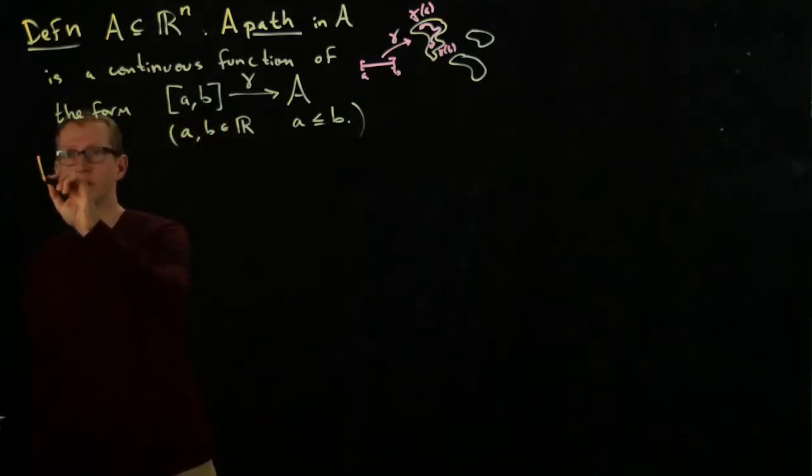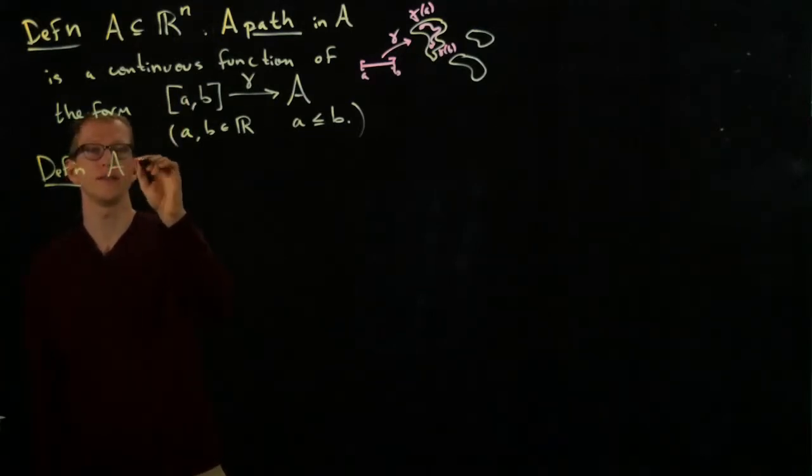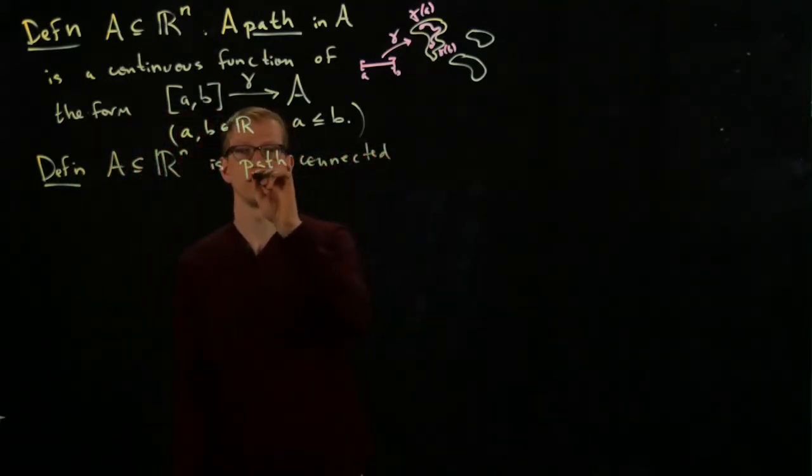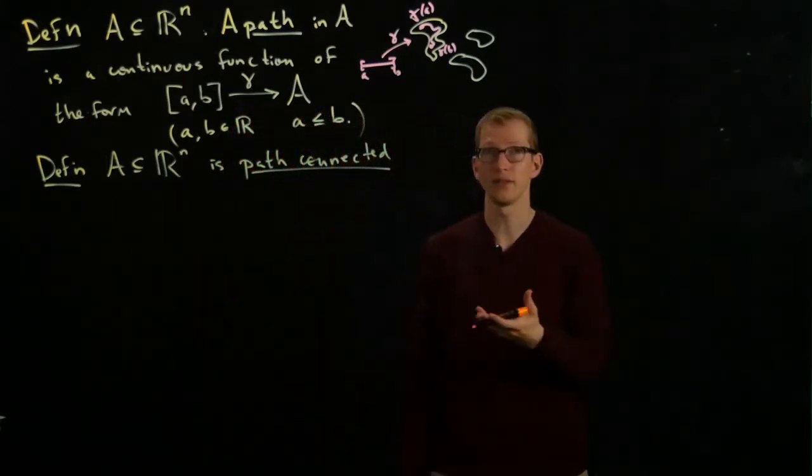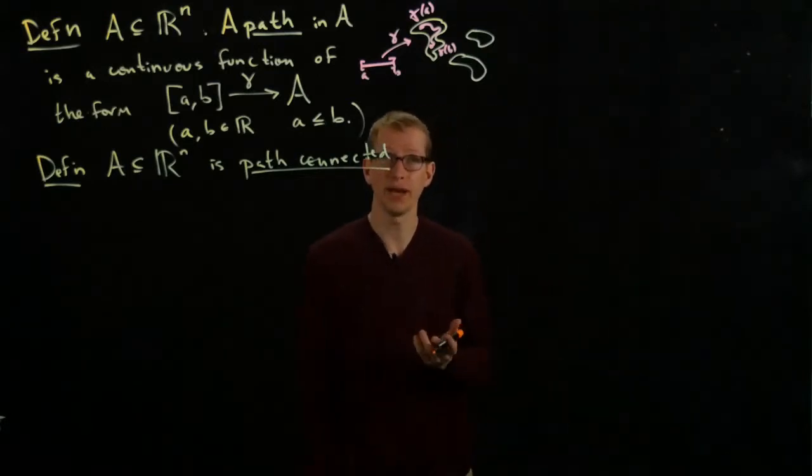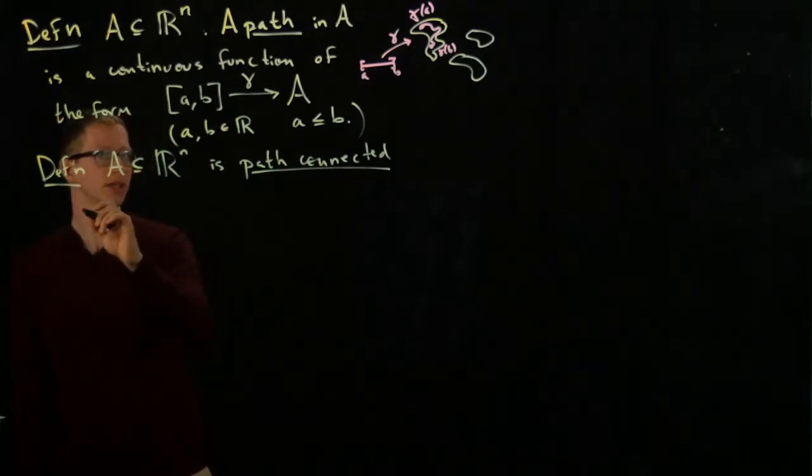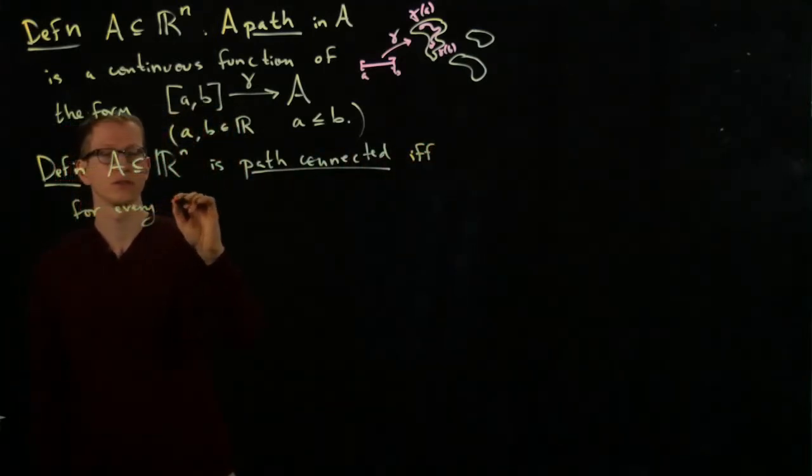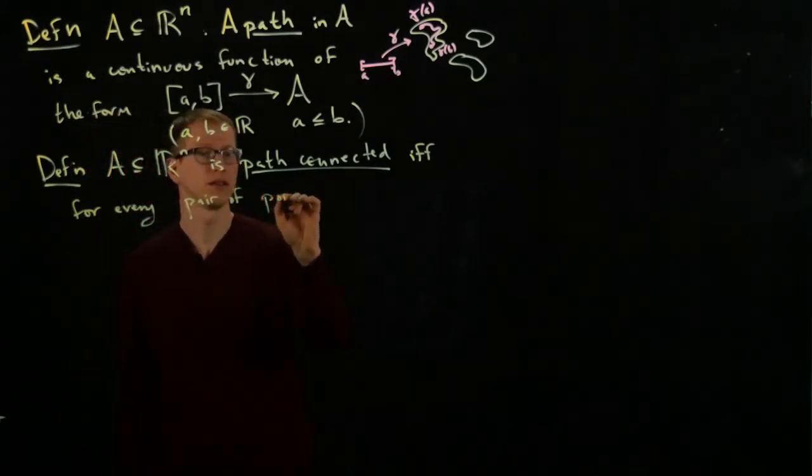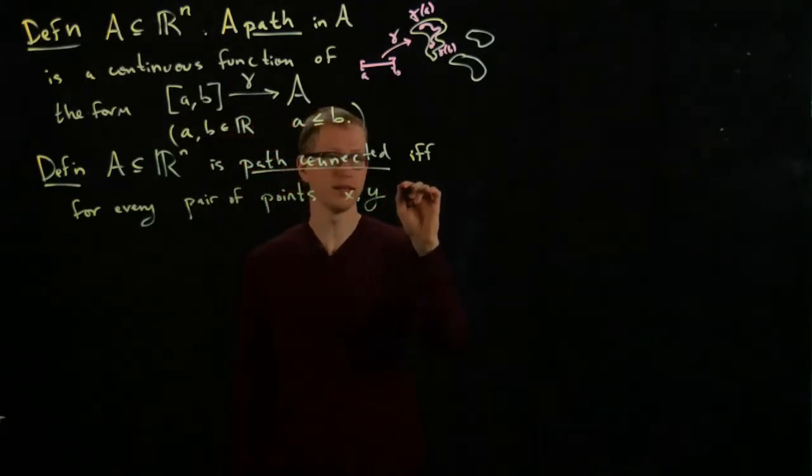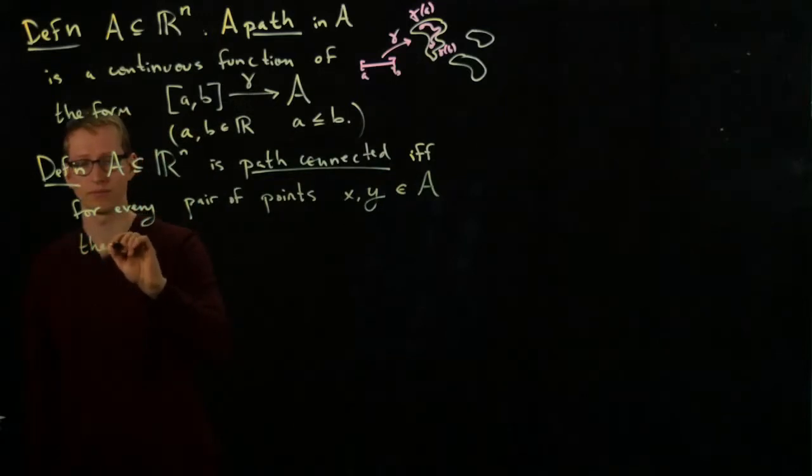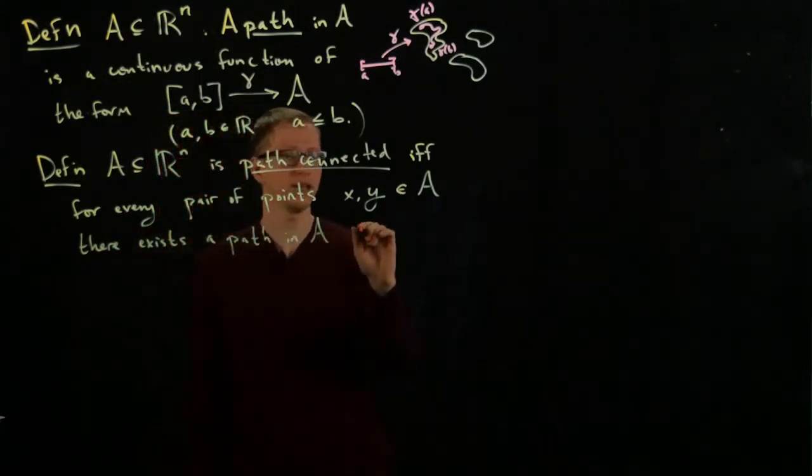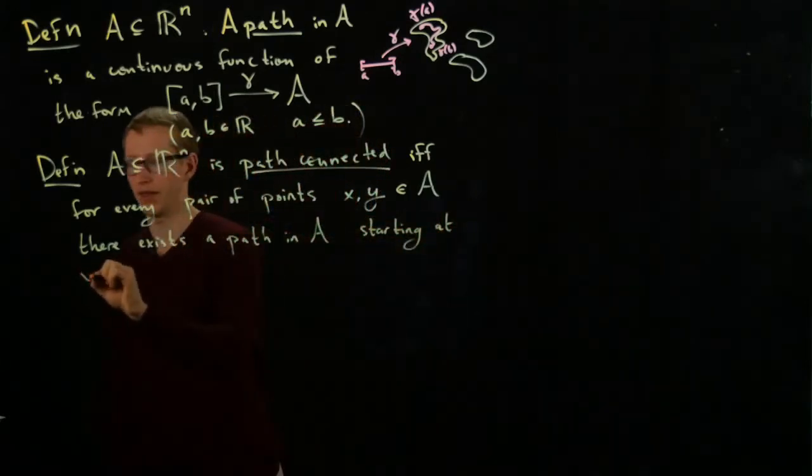Now, another very closely related definition is: a subset A in Rn is path connected. This is another property of subsets of Rn that we haven't yet discussed. We've talked about what it means to be connected, compact, bounded, closed, open, and so on. So a subset is path connected, by definition, if and only if for every pair of points x and y in A, there exists a path in A starting at x and ending at y.